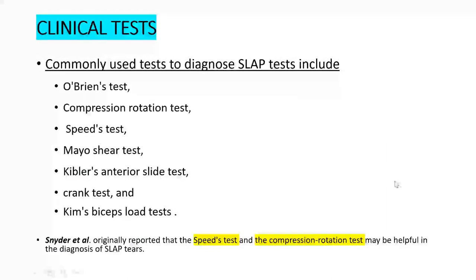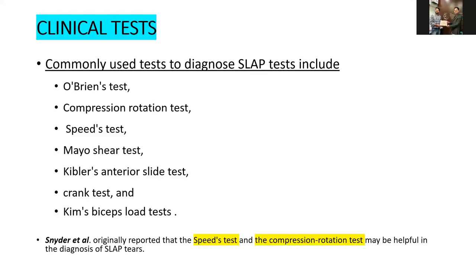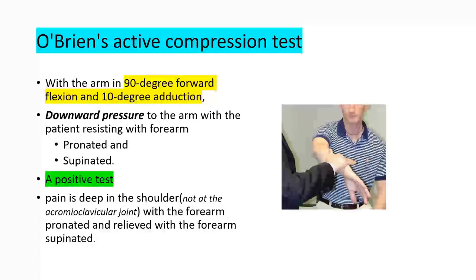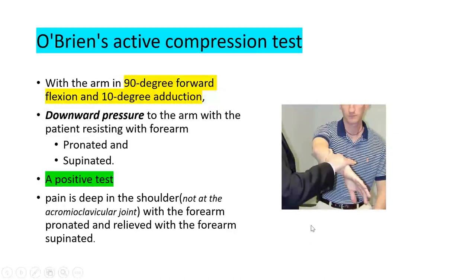The clinical tests used to diagnose SLAP tears include O'Brien's test, compression rotation, speed test, Mayo, Kibler's active compression test, crank test, and Kim's test. As per Snyder et al, the speed test and compression rotation tests are very helpful, giving a high index of suspicion and sensitivity regarding biceps pathology. In O'Brien's active compression test, the patient is seated with the arm at 90 degrees forward flexion and 10 degrees adduction. Downward pressure is applied on the arm with forearm either pronated or supinated. A positive test is pain on pronation relieved by supination.